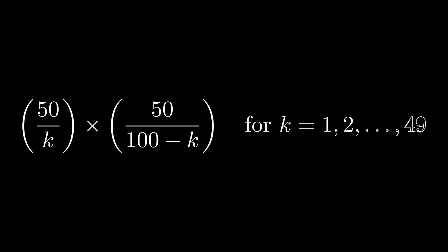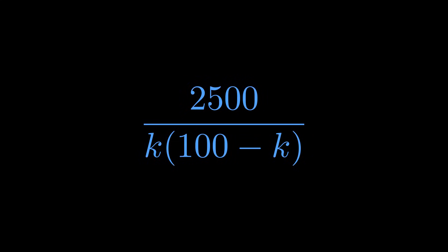So let's think about a general pair. The kth term from the beginning is 50 over k, and the corresponding term from the end is 50 over 100 minus k. When we multiply these together, we get 2500 divided by k times 100 minus k.